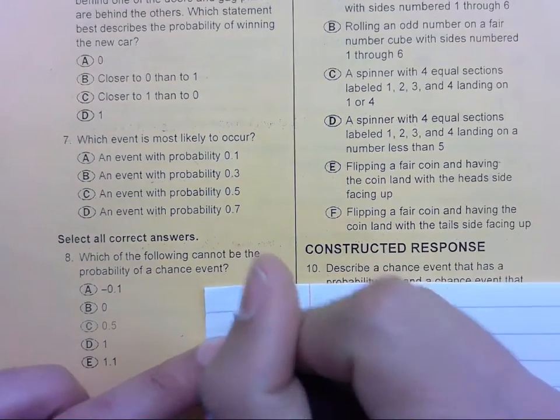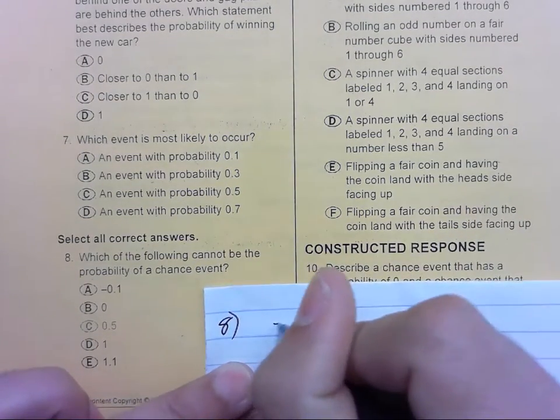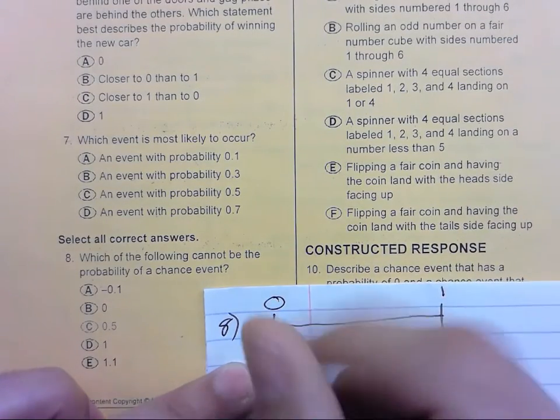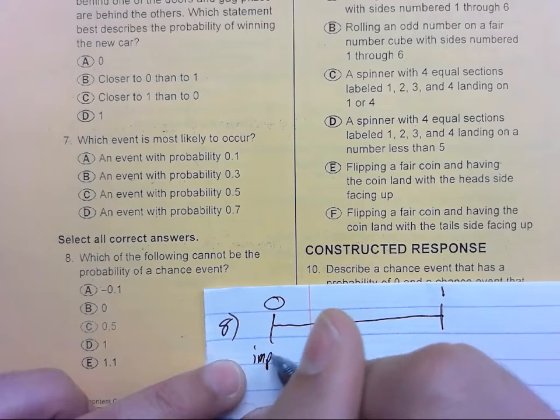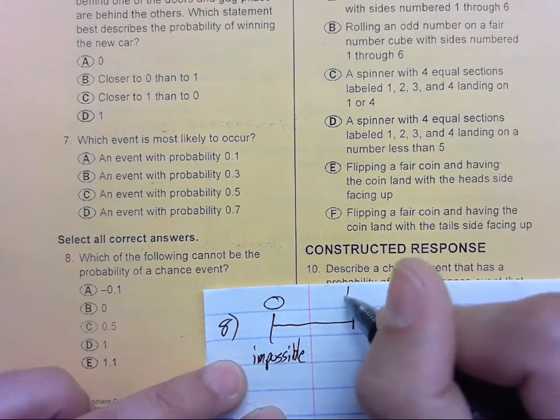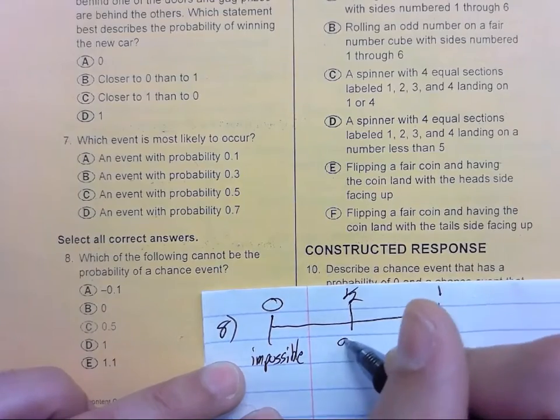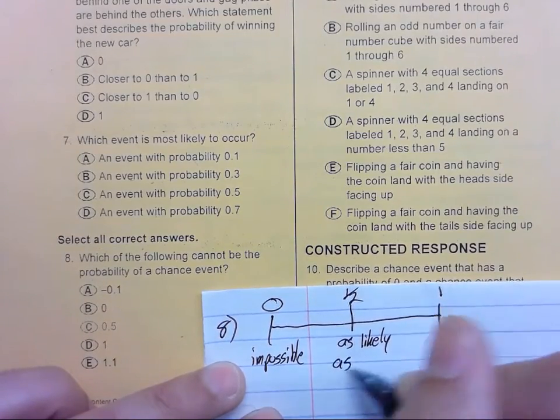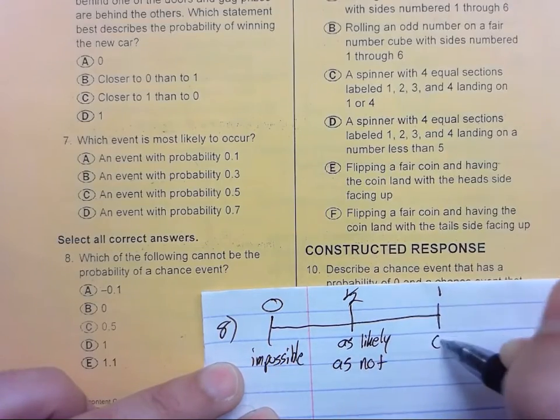So if we're looking at 8, we can redraw our probability spectrum. So 0 is impossible. 1 half is as likely as not. And 1 is certain.